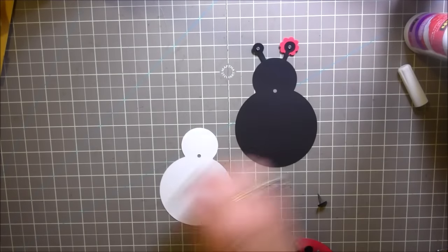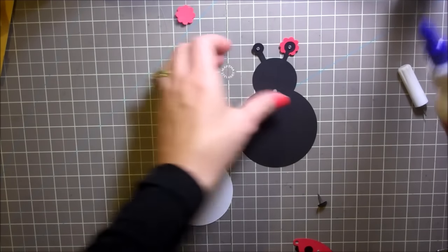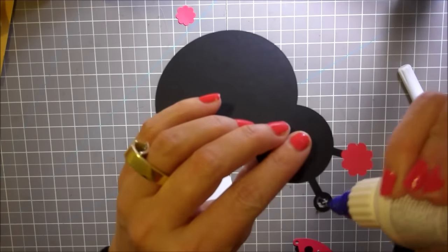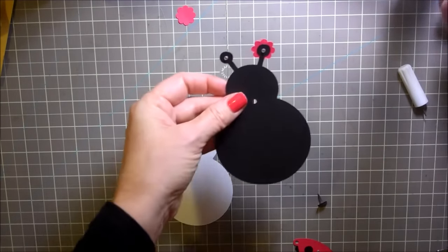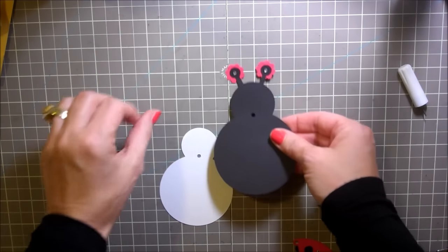I've glued on one of the red parts that goes onto the antenna. I did add some cute little rhinestones just because I thought it added a little extra something to it. I'm going to glue that right down onto here.